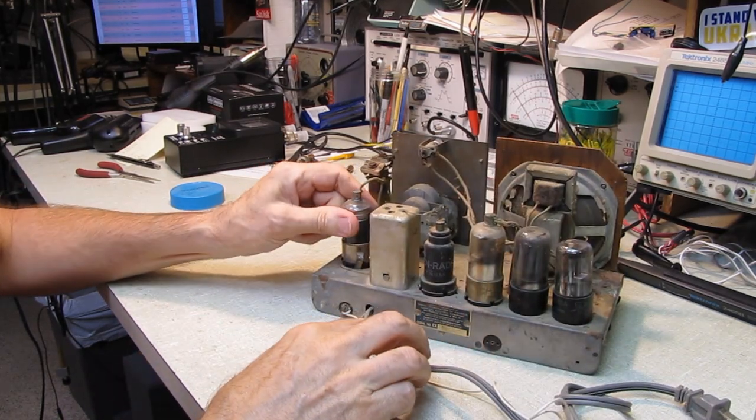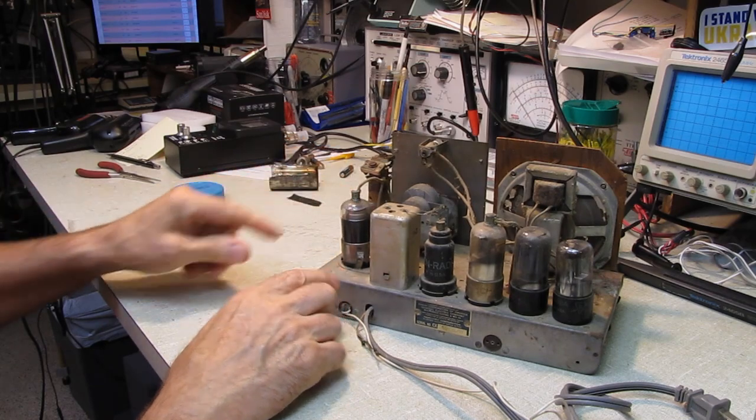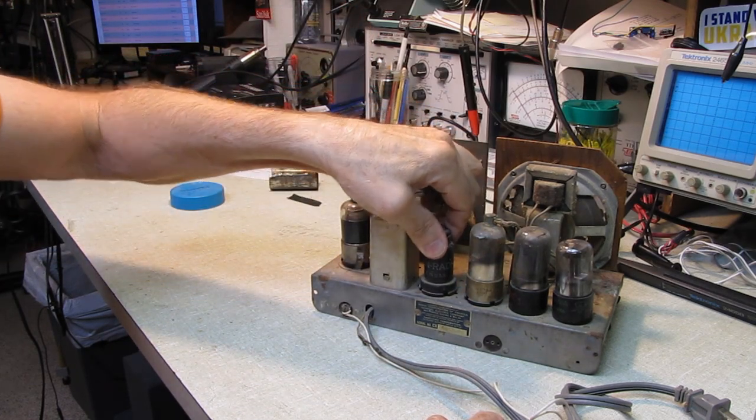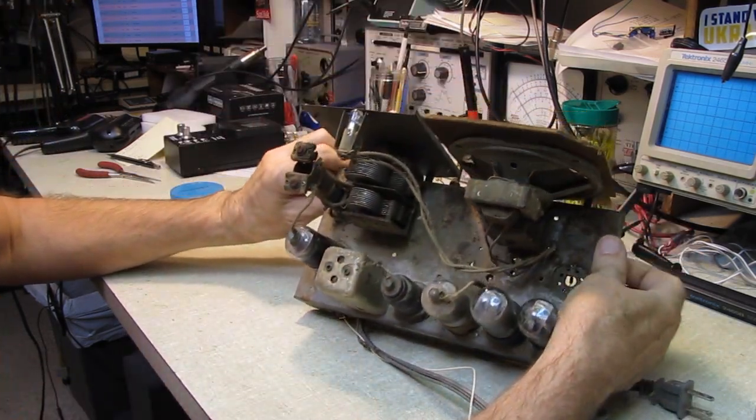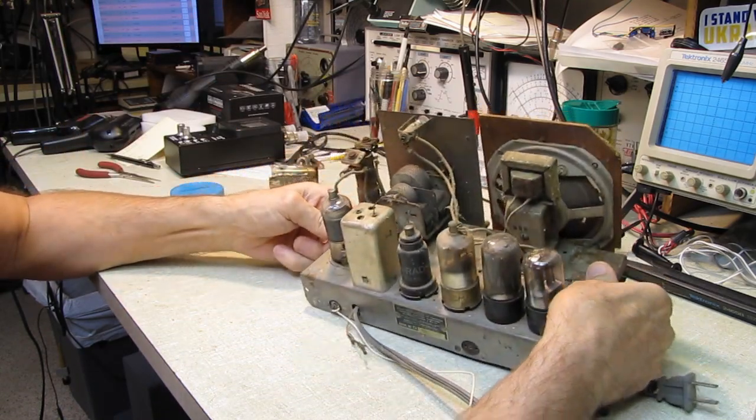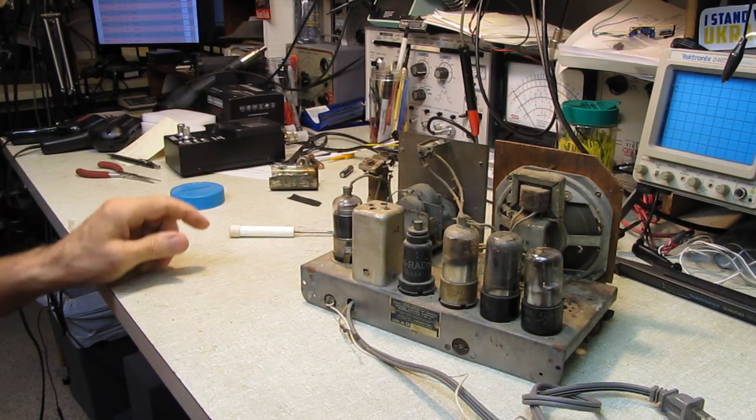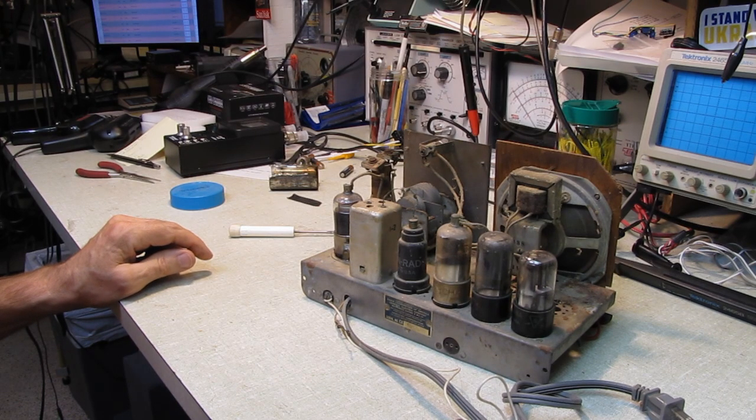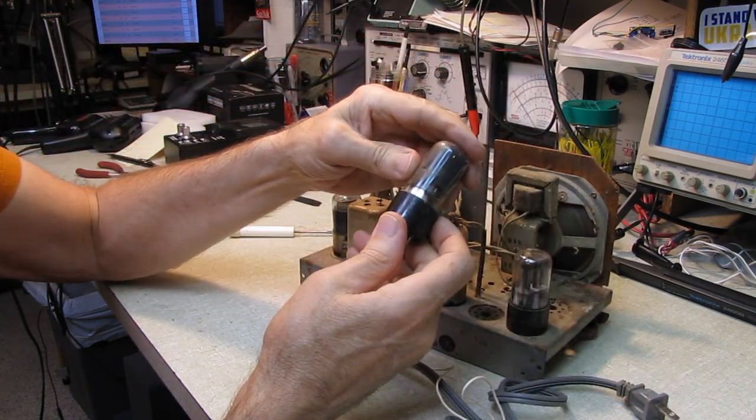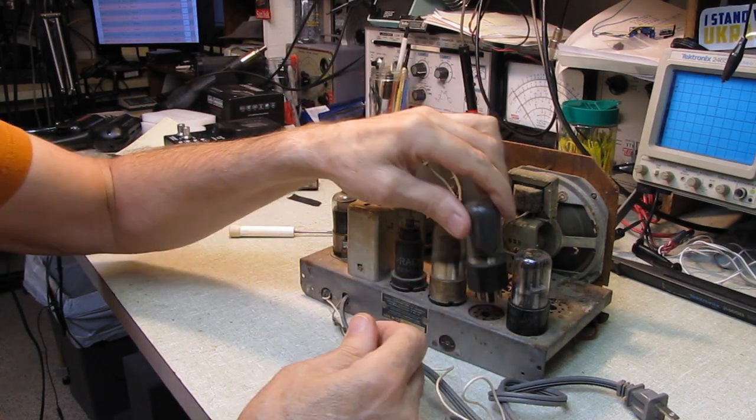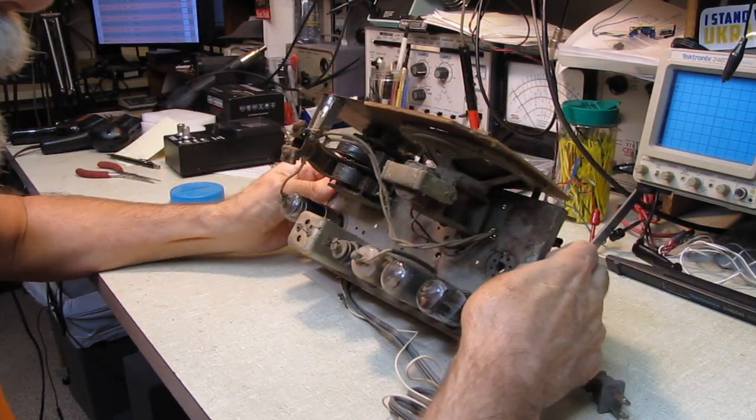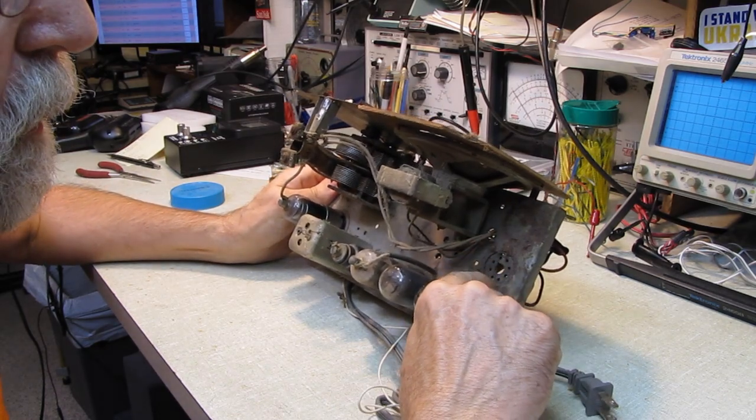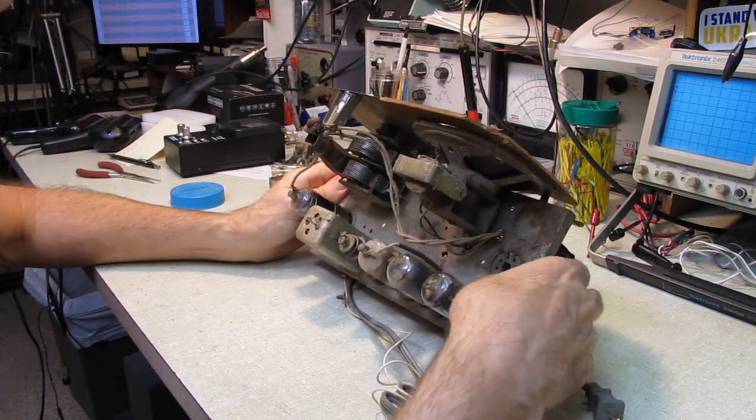Looking at the tube lineup, we obviously have the oscillator converter here. With the antenna coil feeding into it. We have an IF transformer, so this will be our IF amplifier. The other IF transformer is over here. Which would make this our detector first audio. We have what looks like a 5Y3, but no, it's a 25Z6. So that's a 25Z6 rectifier. And this is probably a 50L6. No, 25L6. And an empty tube socket.